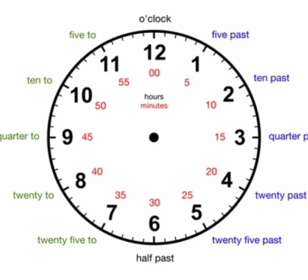So that is how we read them. 1 is 5 minutes, 2 is 10 minutes, 3 is 15 minutes, 4 is 20 minutes, 5 is 25 minutes. When the long hand is at 6, we say 30 minutes, which is half past. Half an hour — we say half past.